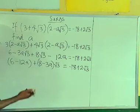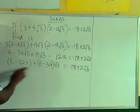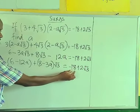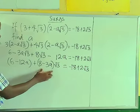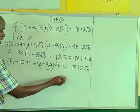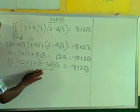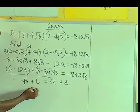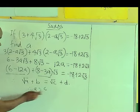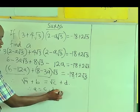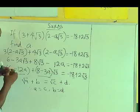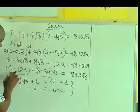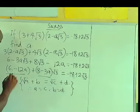We can see that the first part has no roots and the second part has roots. This is what we call equality of surds — whenever two surd expressions are equal, the rational parts are equal and the surd parts are equal. So we equate them separately.